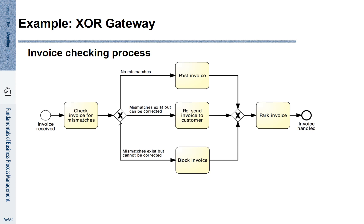Let us have a look at a simple process to understand how the XOR gateway works. Here we see an invoice checking process. Once an invoice is received, we need to check the invoice for mismatches. Now we arrive at an XOR split. We progress depending on the conditions that are mentioned. If there are no mismatches, we post the invoice.